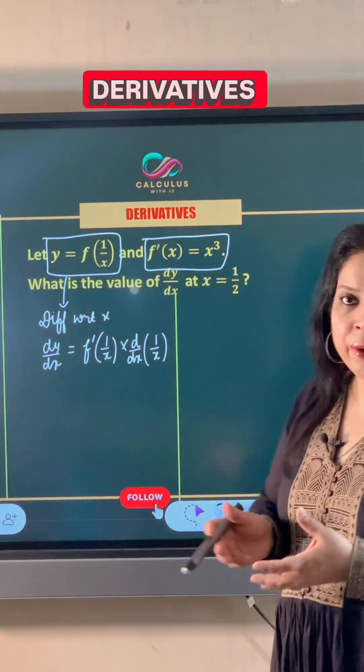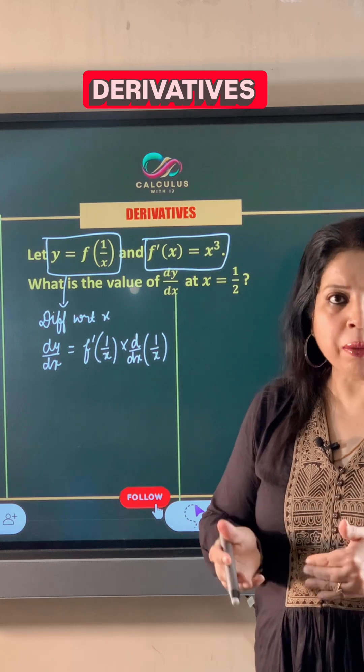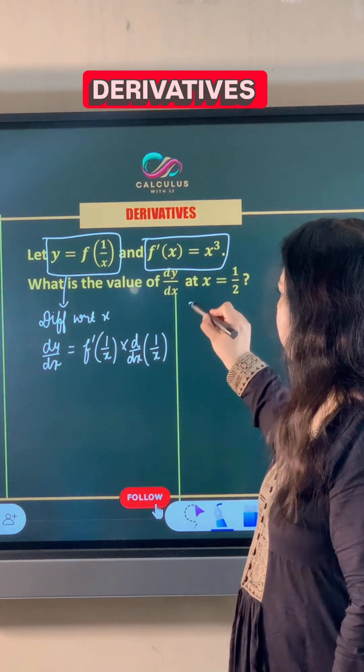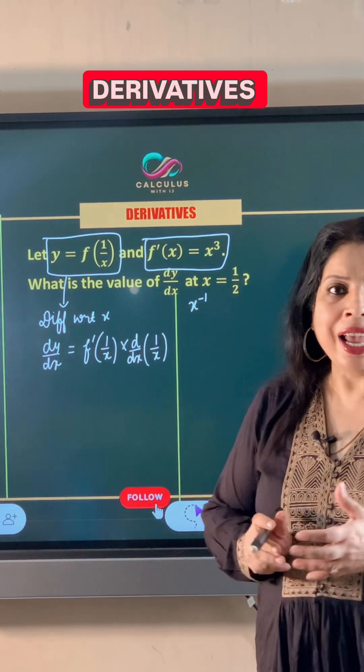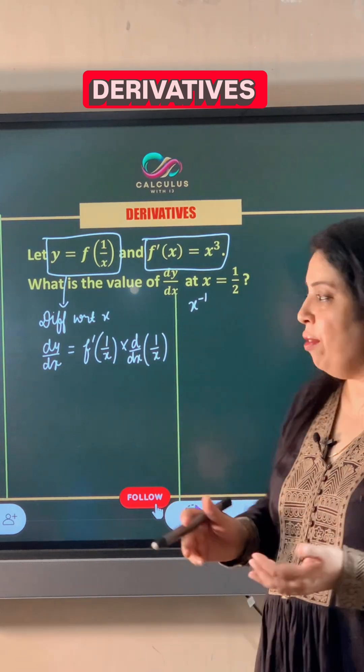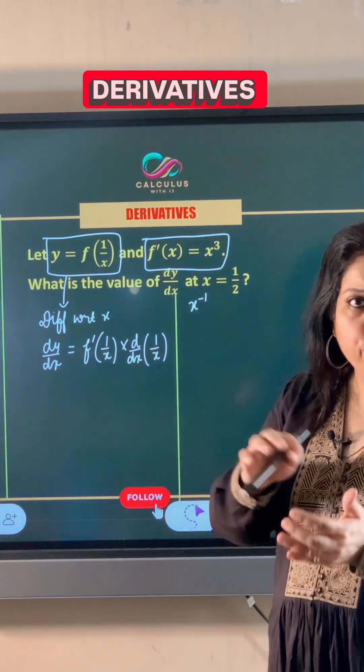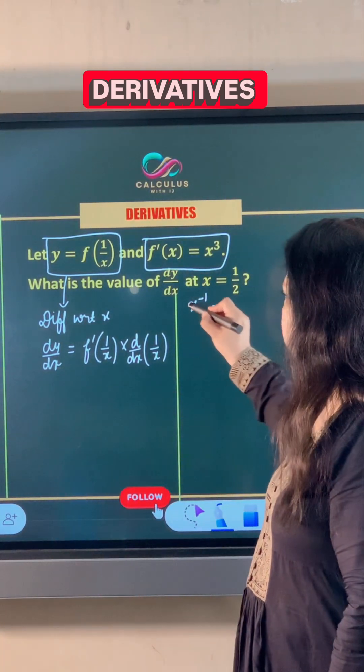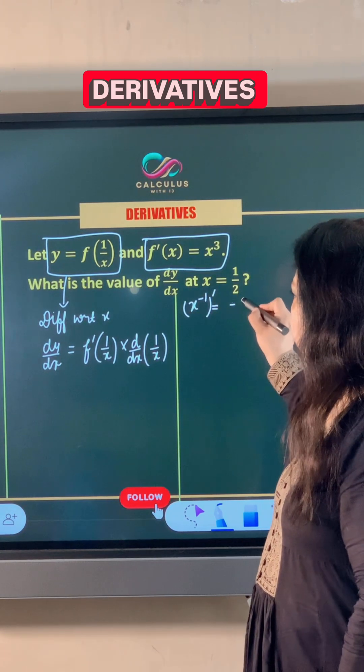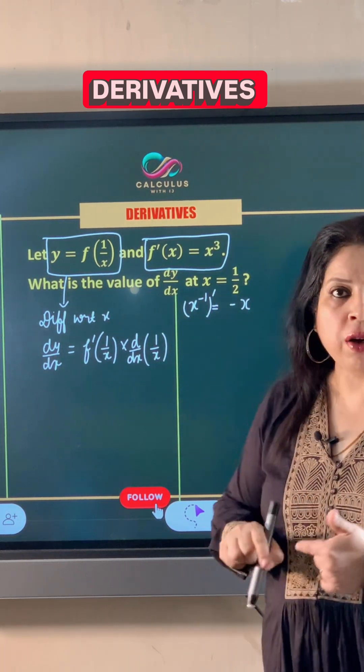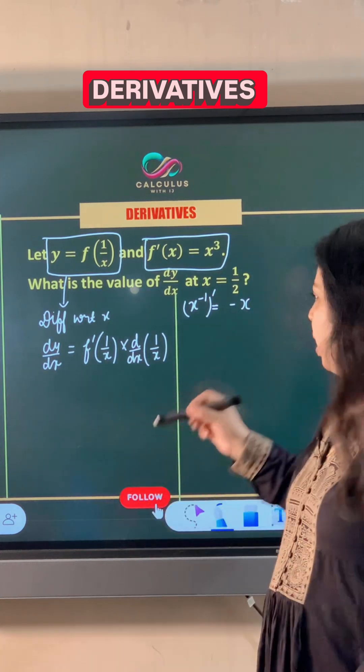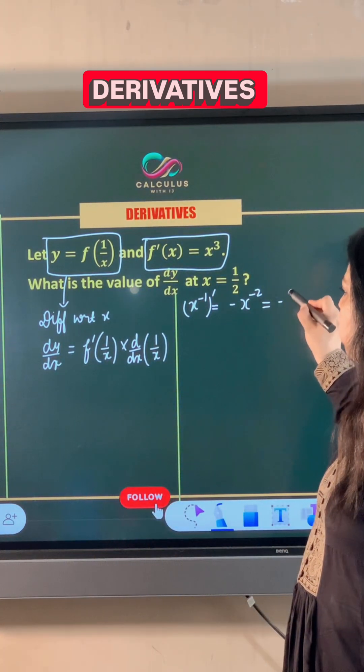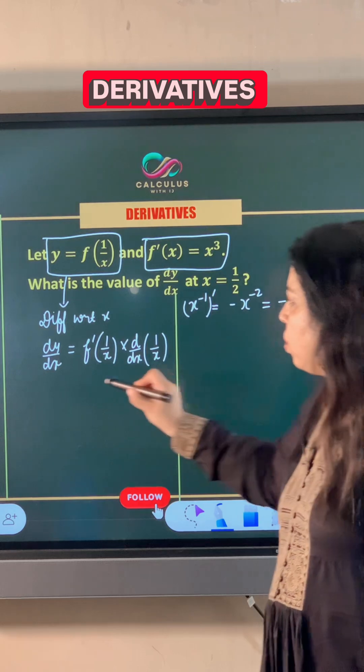Now what is derivative of 1 upon x? 1 upon x can be written as x to the power minus 1, and when we take its derivative, minus 1 comes before x raised to the power minus 2. So this becomes minus 1 upon x square.